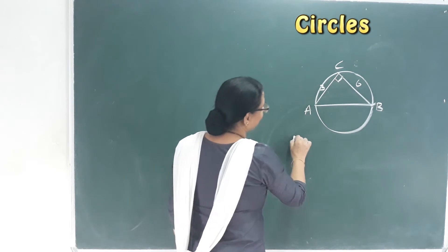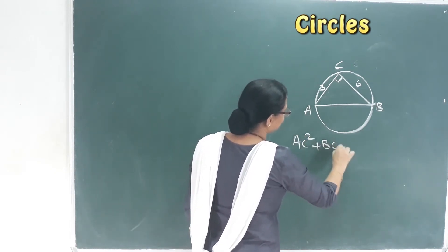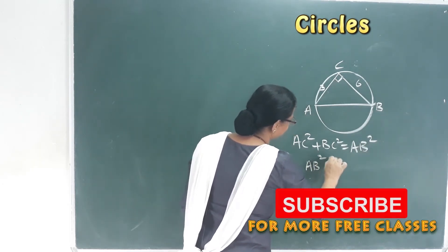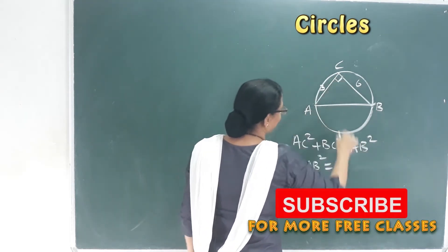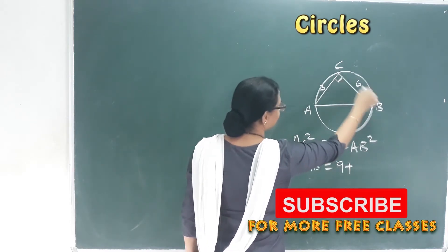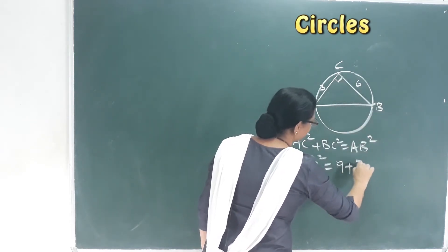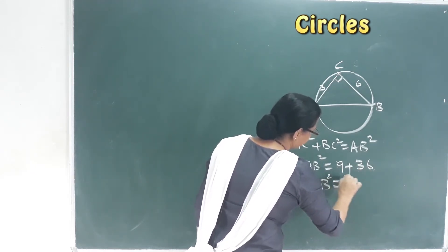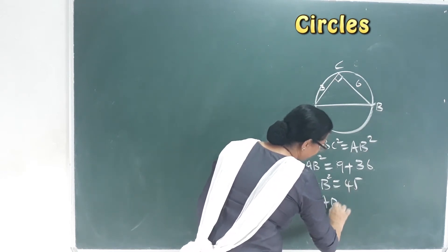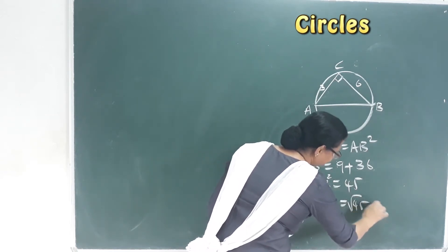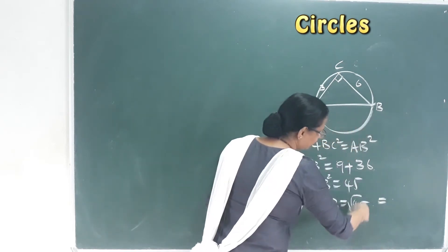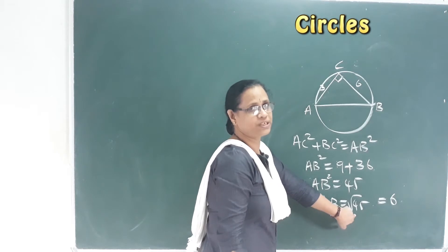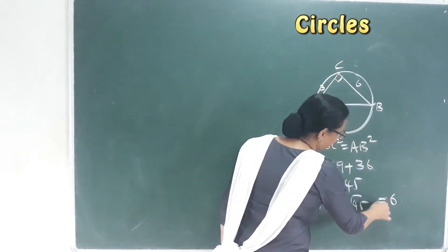The right triangle: AC² plus BC² equals AB². That means AB² equals AC² plus BC². 3 squared is 9, and 6 squared is 36. So AB² equals 45. AB equals √45, which is approximately 6.7 using the calculator.